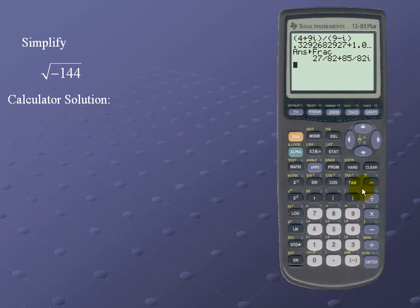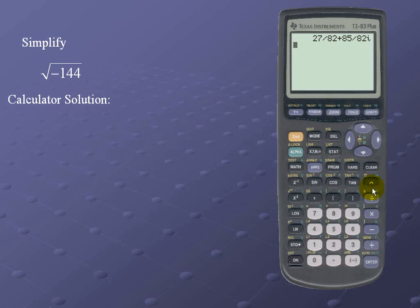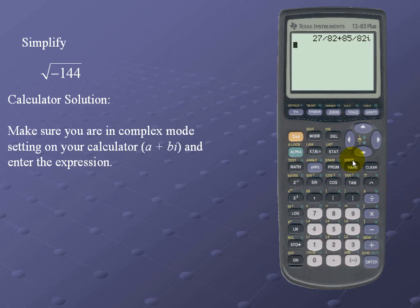Let's take a look at the calculator solution. Since I'm already in the correct mode, I'll simply enter the square root of negative 144 and close off the parenthesis, for a result of 12i.